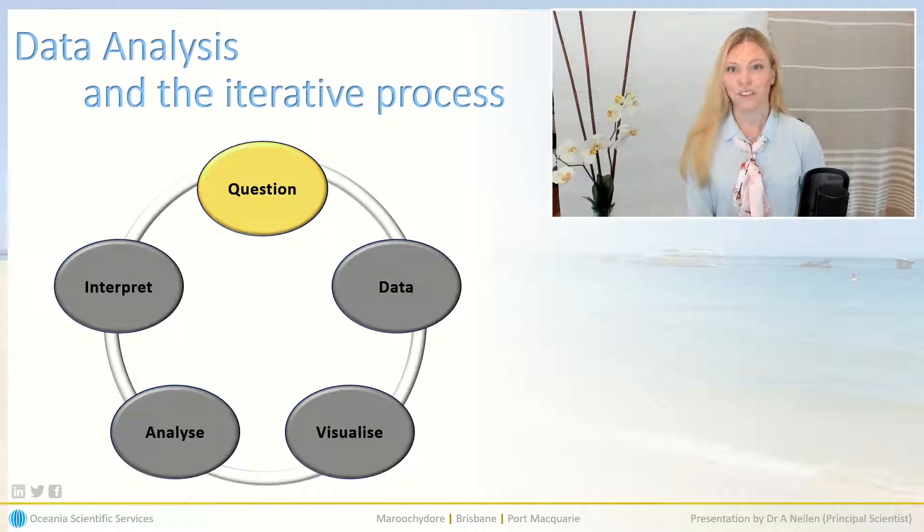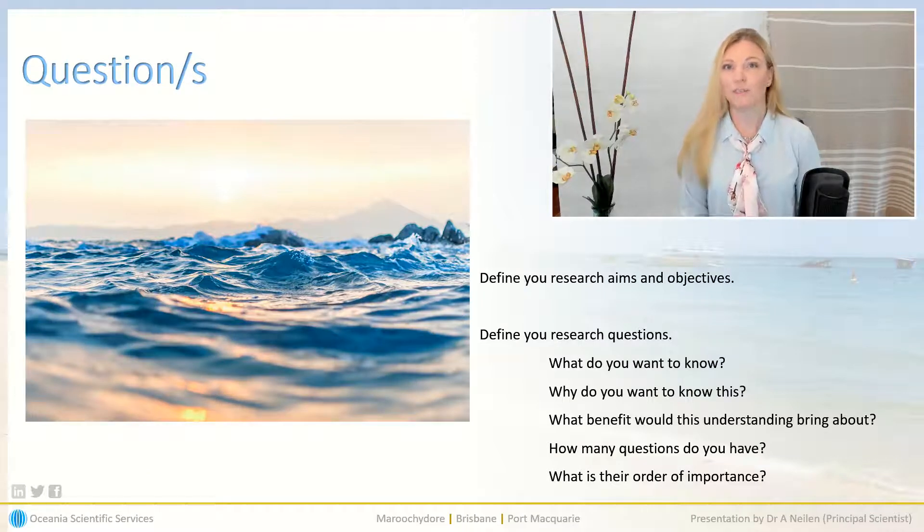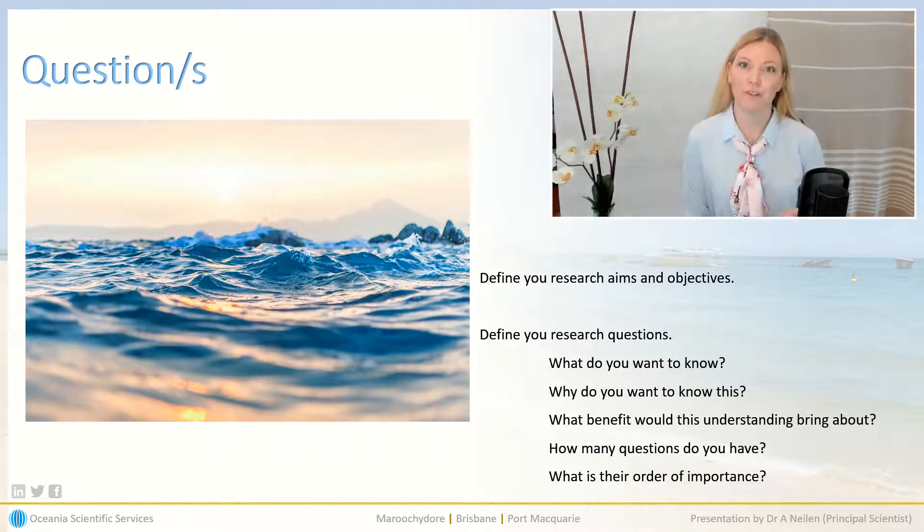First your research question. It's important to be clear and concise. There can often be embedded questions and sub questions but you need to know the hierarchy and what matters the most. Make sure you first define what your research aims and objectives are. What do you actually want to know and what was of most value to your project. Why would you like to know this? Often the why could impact on what the question itself is. How many questions do you need answered and what's their level of importance as I mentioned.